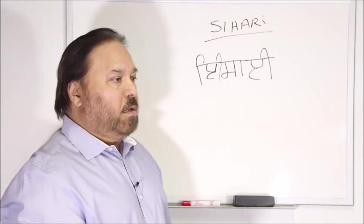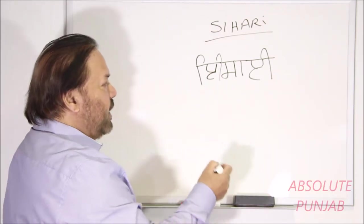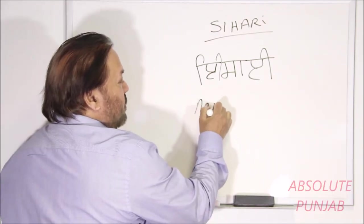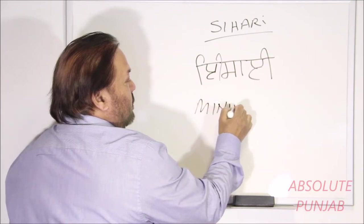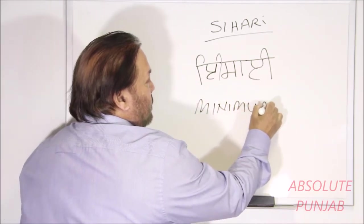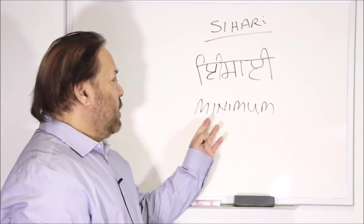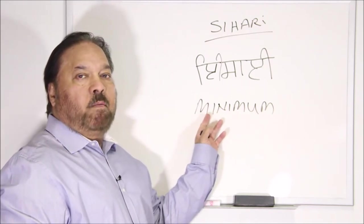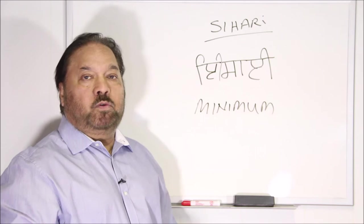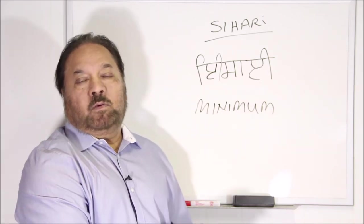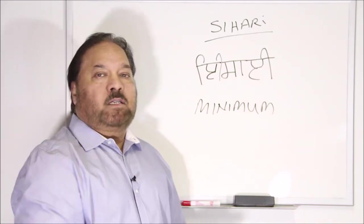For example, if I write down in English minimum, you know the difference of the sound. In English, the problem is we use one vowel sign to make different sounds.